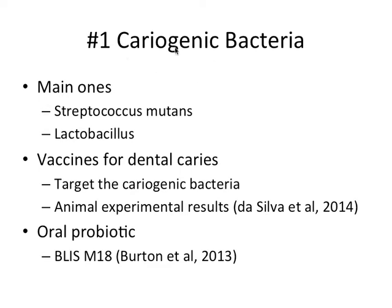Now people have tried to eliminate a component from this equation, theoretically stopping cavities from forming. Let's look at cariogenic bacteria, which basically means these are bacteria that are able to form caries and contribute to decay in the mouth. The main ones are Streptococcus mutans and Lactobacillus — probably the two main players — with Streptococcus mutans being the biggest player, because it's literally built for causing cavities.